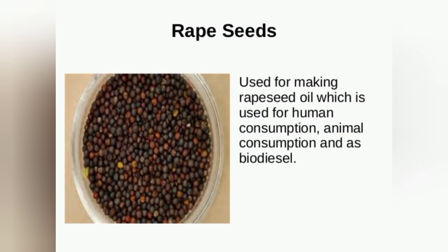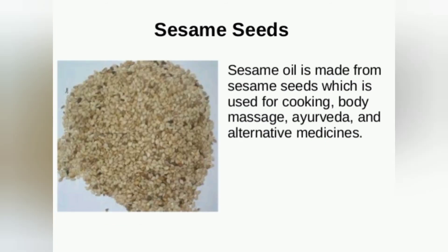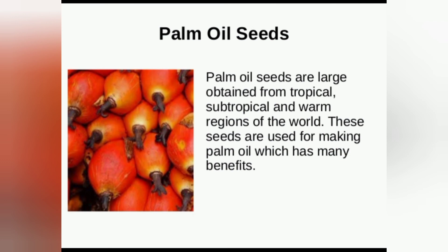Sesame seeds: sesame oil is made from sesame seeds, which is used for cooking, body massage, ayurveda, and alternative medicines. Palm oil seeds: palm oil seeds are largely obtained from tropical, subtropical, and other regions of the world.